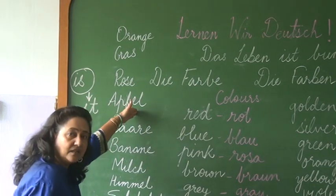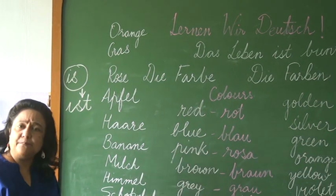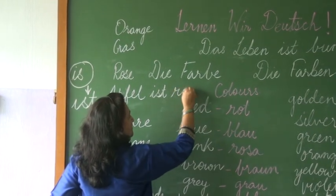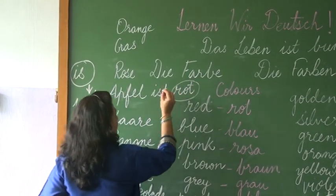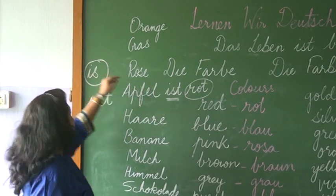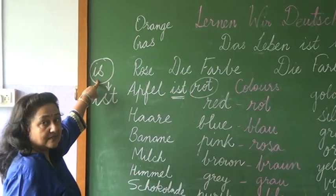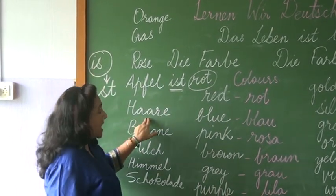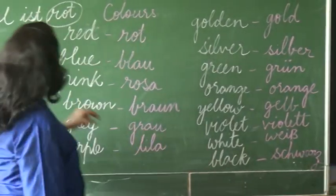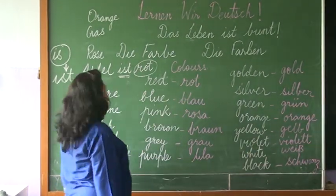Apfel means apple. Apple — which colour is an apple? Suppose we say: Apfel ist rot. Now, Haar means hair. Hair is black, so we can say: Haar ist schwarz.